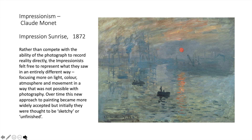This is considered to be the first Impressionist painting by Claude Monet — it's called Impression Sunrise from 1872. Rather than compete with the ability of the photograph to record reality directly, the Impressionists felt free to represent what they see in an entirely new way, focusing more on light, color, atmosphere, and movement — things not possible with photography. Remember, when we talk about photography in the late 1800s and early 1900s, we're talking about black and white photography. So one thing painting had that photography didn't have was color and all the expressive possibilities that color could make use of.